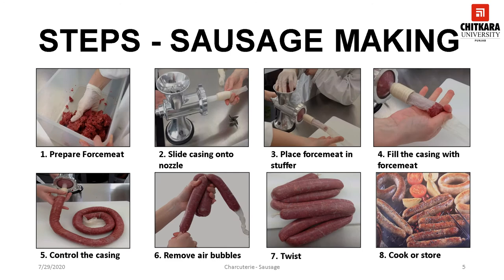This slide explains the various steps involved in sausage making. Picture one shows the preparation of force meat. To prepare force meat, one has to weigh the meat and fat and cut them into small chunks to fit into the grinder. If the sausages are to be cured, toss the cure mix with the diced meat at this point. Chill the meat well before proceeding. Grind the meat and fat following the recipe to achieve the proper fineness or coarseness of grind. Chill the meat again, then combine the meat, salt, and spices and mix thoroughly. Slide the casings onto the nozzle.